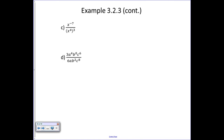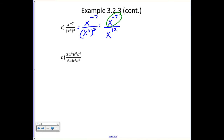We have x to the minus seven over x to the fourth, all cubed. Let's leave x to the minus seven for now and simplify the denominator: x to the fourth cubed is x to the four times three, or x to the twelfth. Moving the negative exponent to the bottom gives one over x to the seventh times x to the twelfth. Since we're multiplying, we add the exponents: seven plus twelve is nineteen, giving one over x to the nineteenth.